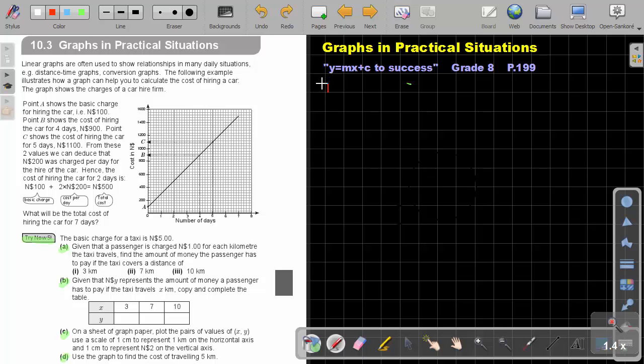Let's start. We're going to start with Try Now, and that's going to be number 5. Let's start with number A. The basic charge for a taxi is $5,000, given that the passenger is charged $1,000 for each kilometer the taxi travels. Find the amount of money the passenger has to pay if the taxi covers a distance of 3 kilometers.